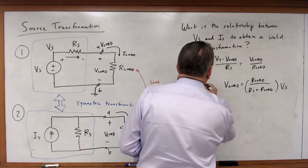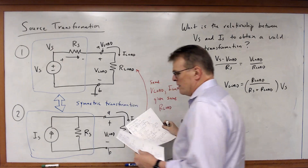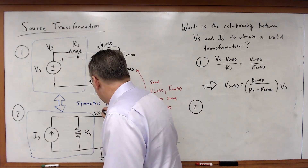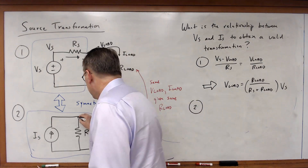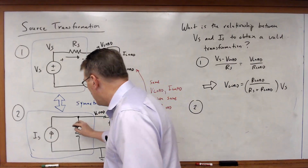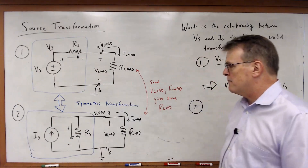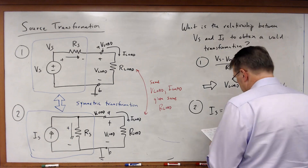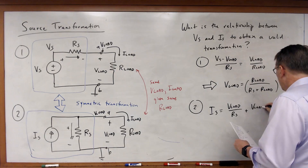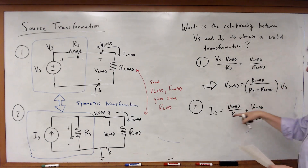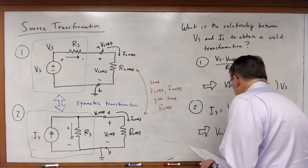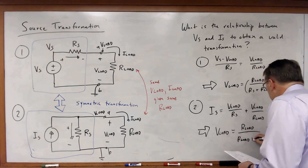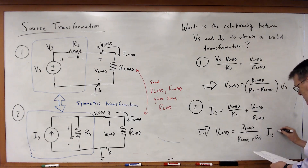Now let's look at Circuit 2. Once again I'm going to ground this node, and this becomes V-load — that's the voltage at the top. The entire top node is the same node. So I've got a current flowing through resistor RS, and therefore IS equals V-load over RS plus V-load over R-load. After a little algebra, V-load equals R-load over (R-load plus RS) times IS times RS.